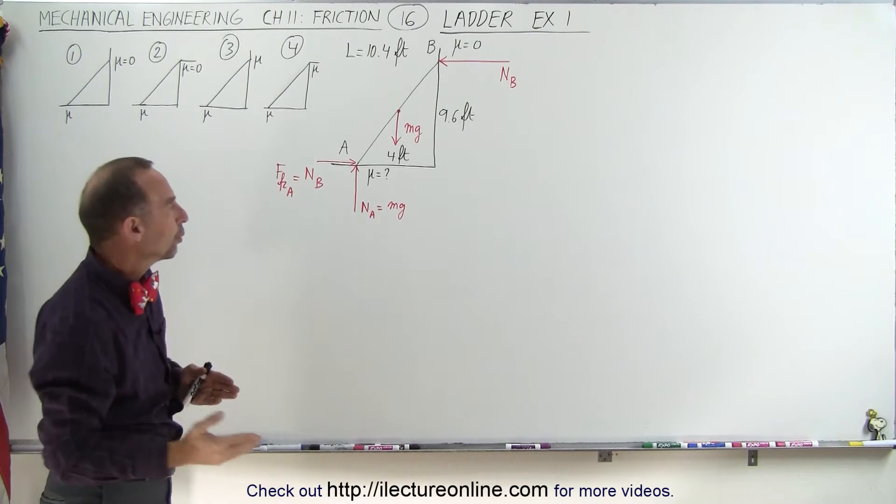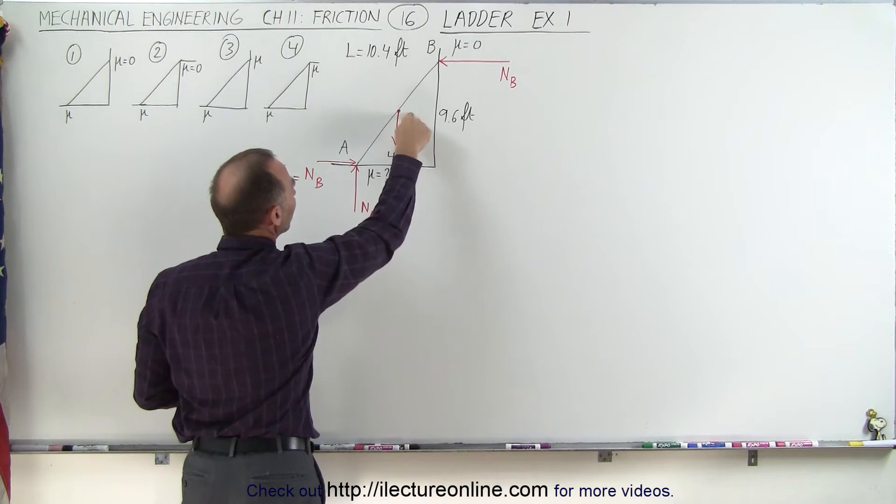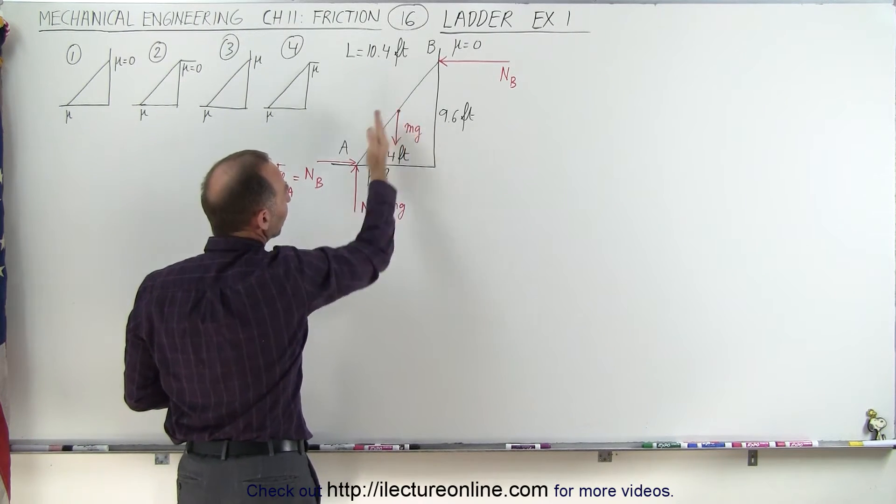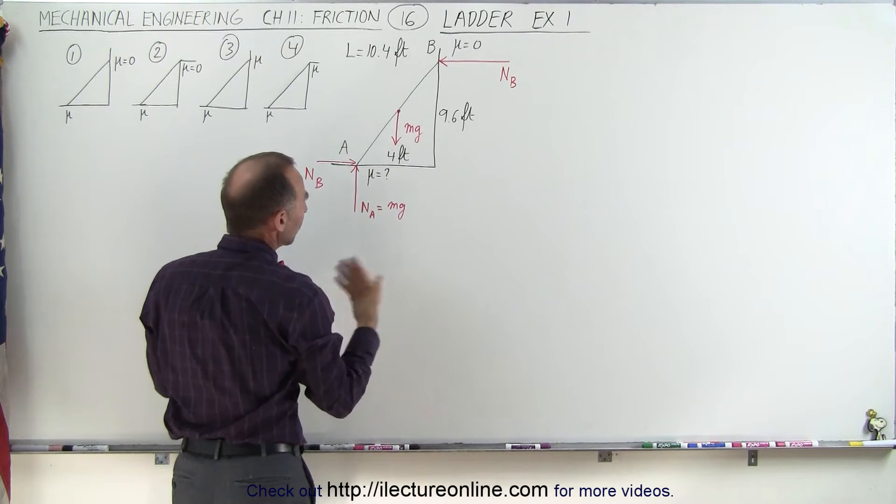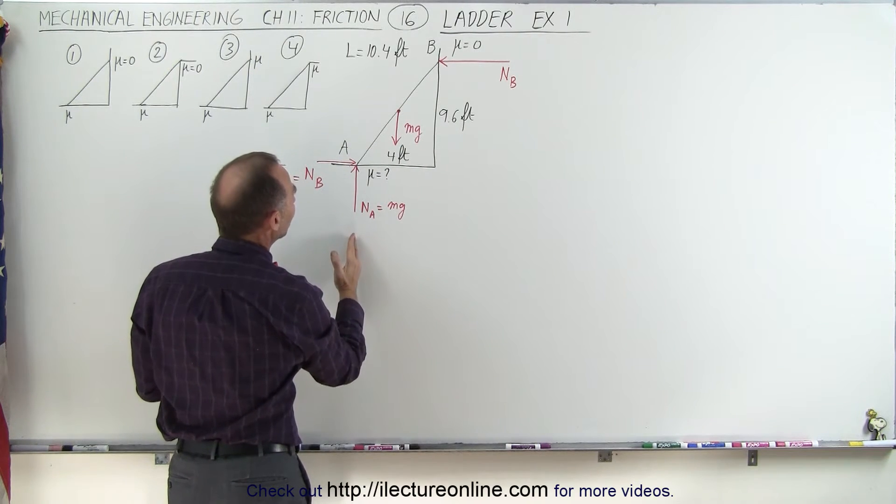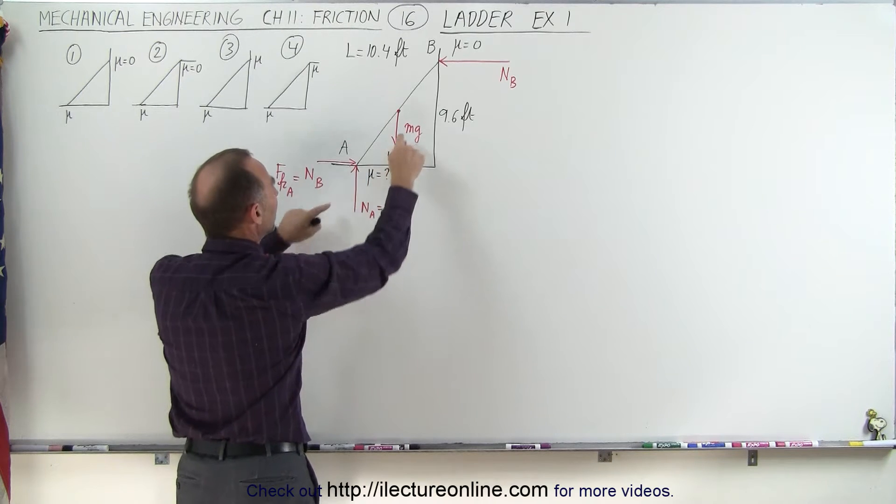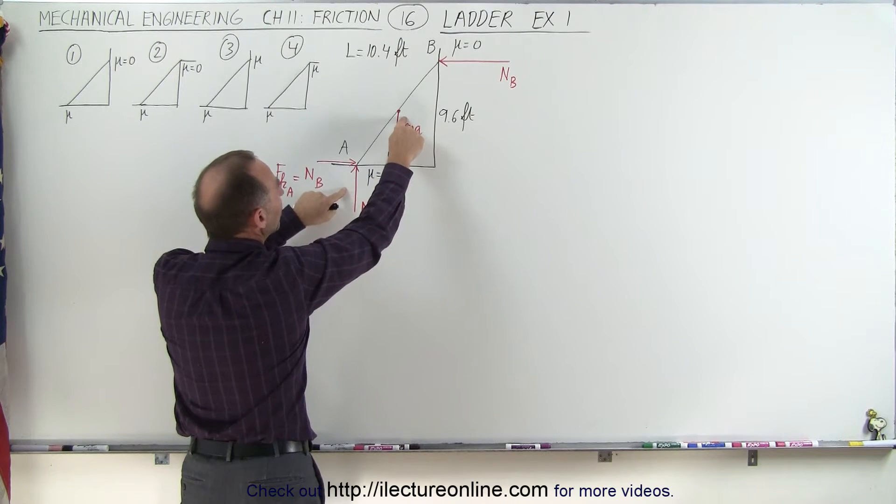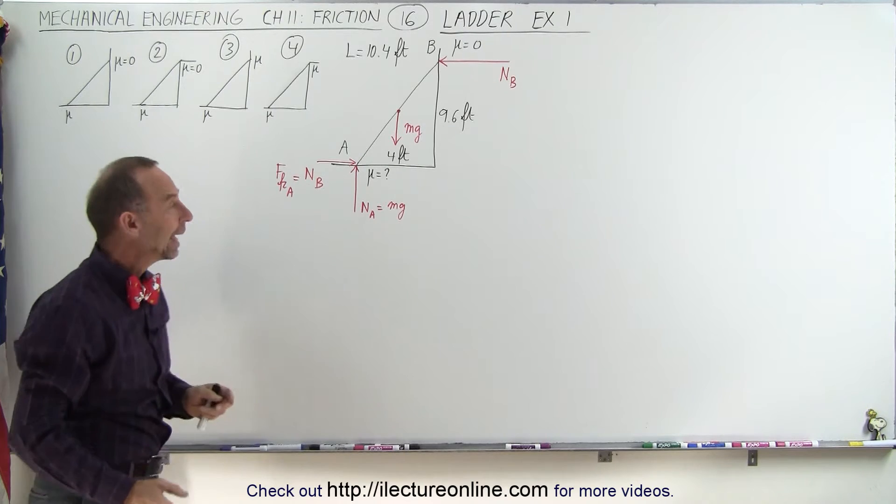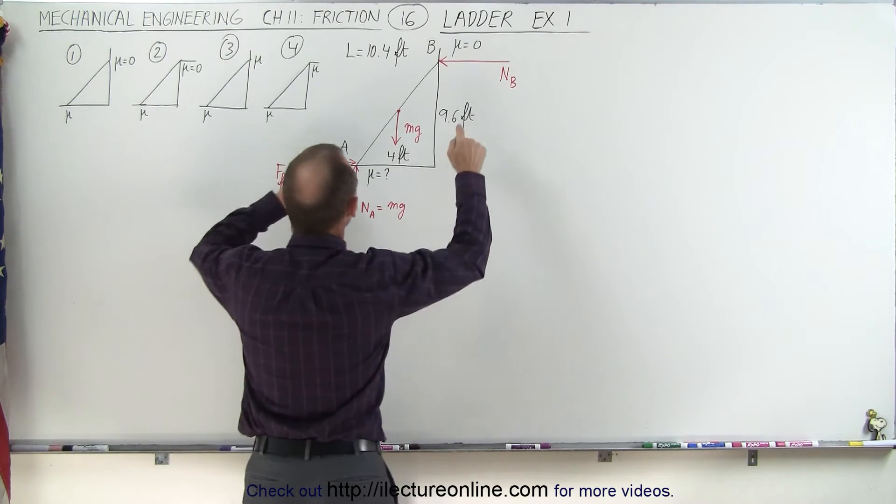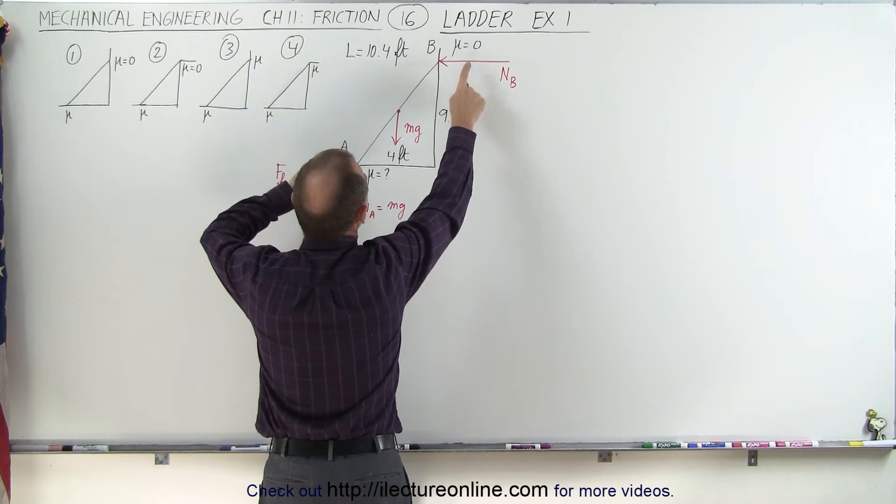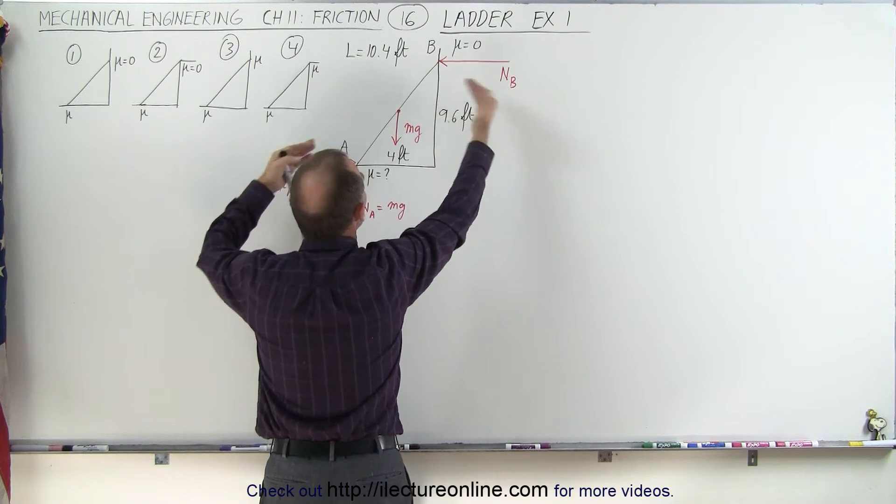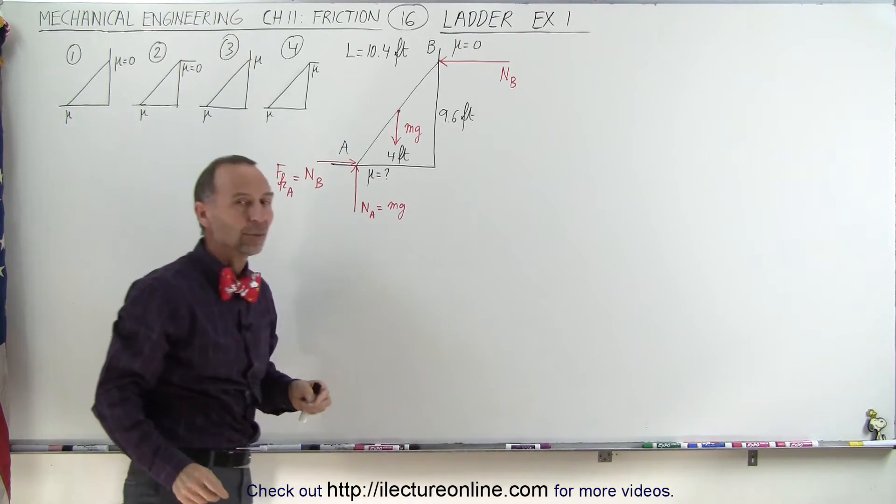Notice that the only two components in the vertical direction are the weight of the ladder, which acts as the center mass, which should be the middle of the ladder to make things simple, and we have the normal force pushing back here. These forces need to be equal in magnitude and of course opposite in direction, and the only two forces acting in the horizontal direction are these two, so therefore those two must be equal in magnitude and obviously opposite in direction.